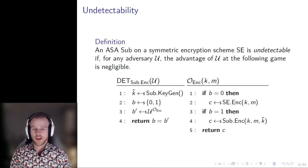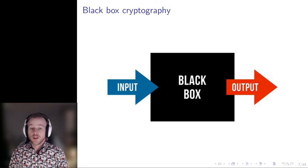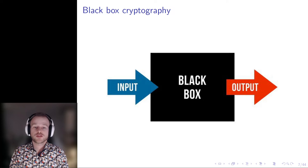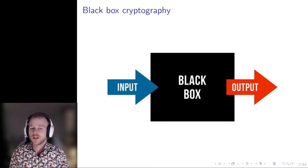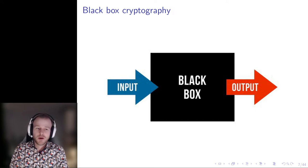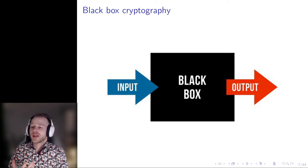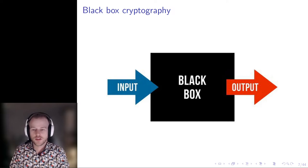I've introduced another component to the ASA: the key Kbar. Kbar is generated by a keygen algorithm specific to the ASA and used by the subverted encryption algorithm. While Kbar could be considered part of the description of SUB.enc, it will be useful to parameterize this subversion key. It is worth noting that we're referring here to black-box cryptography — this area started with a paper by Young and Jung in 1997 warning against it. In practice, a user could detect an ASA by reading the code, but there are many situations where that may not be possible, and code vulnerabilities can go undetected for years.